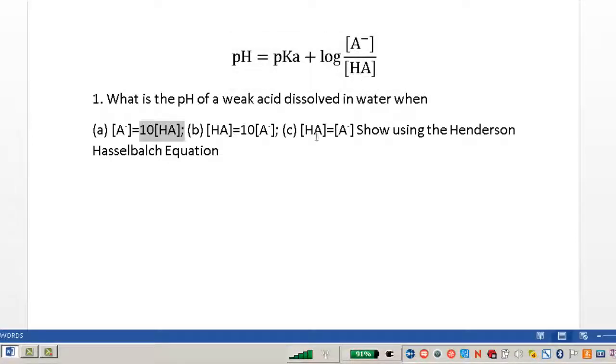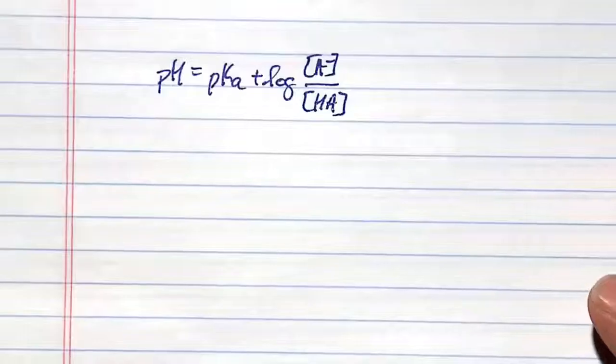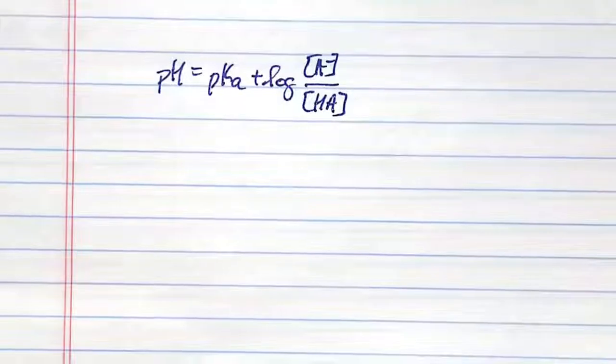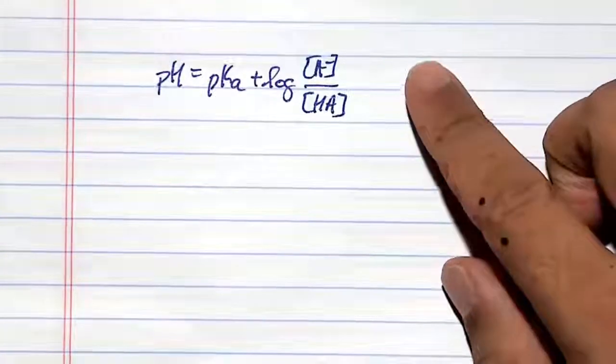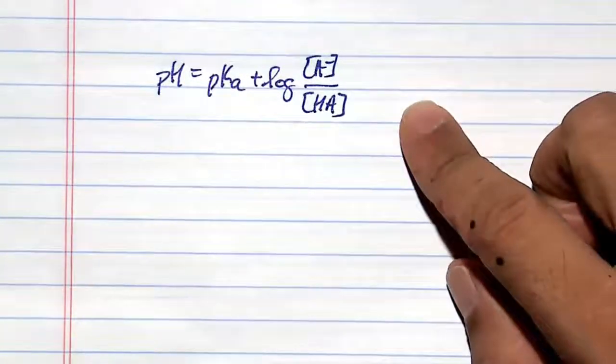Here, you just basically plug in. HA and A- are equal to one another, so they cancel each other out. You'll get log of 1. The first practice problem asks us three situations where you have different concentrations of A- over HA.